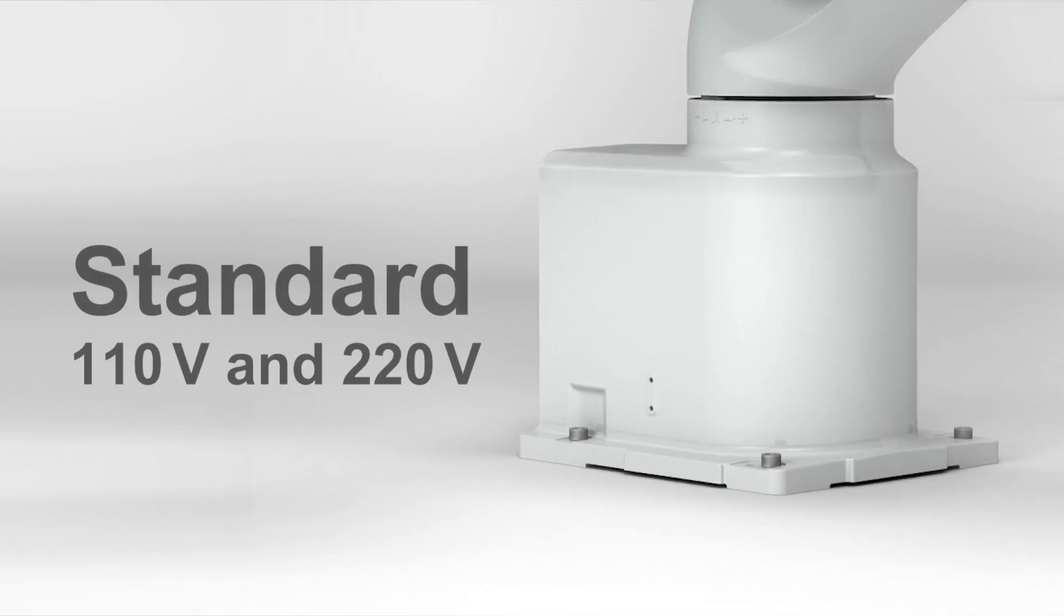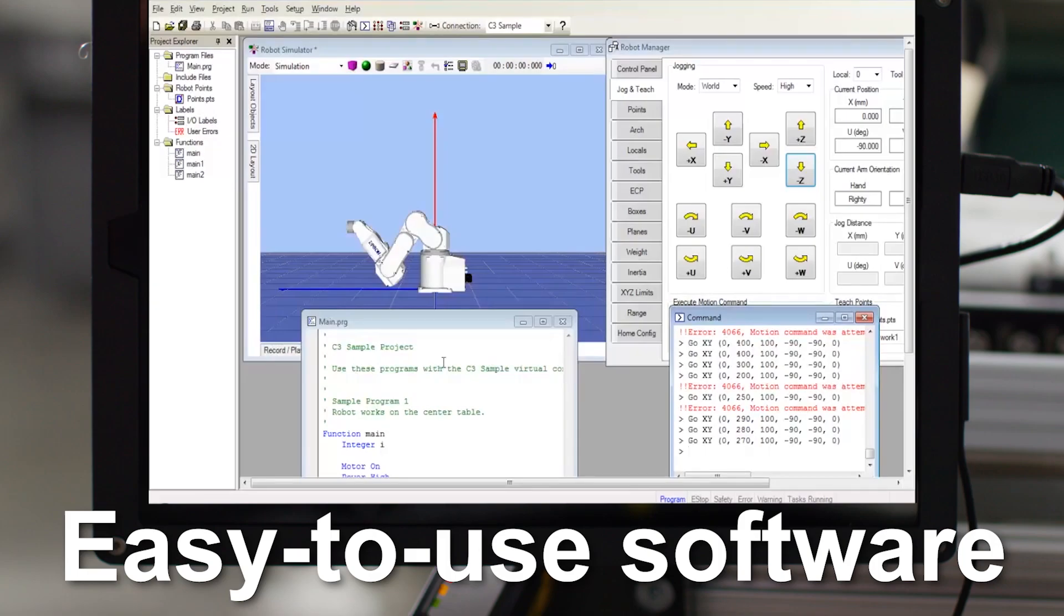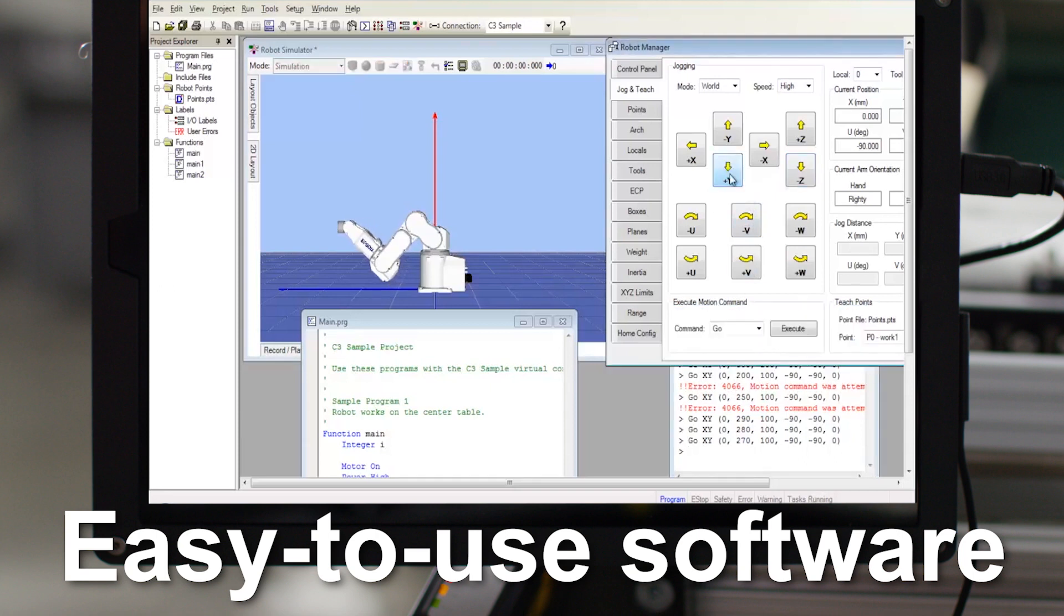The VT6L also comes standard with 110V and 220V power for low power and wattage consumption. And it is offered exclusively with Epson RC Plus development software, the same powerful software found in Epson's high-end robots.